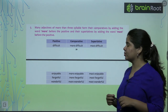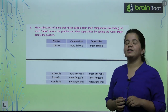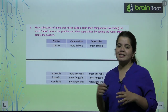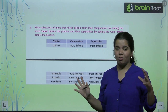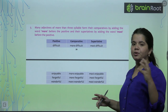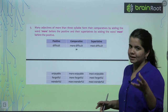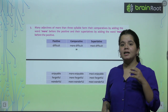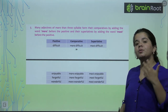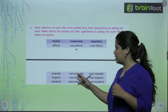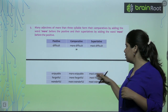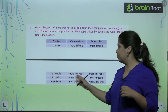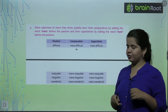Some words like 'difficult,' 'beautiful,' 'intelligent' — we don't say 'difficultest,' that is completely wrong. For longer words, we use more and most. So: difficult, more difficult, most difficult. Enjoyable, more enjoyable, most enjoyable. Forgetful, more forgetful, most forgetful.